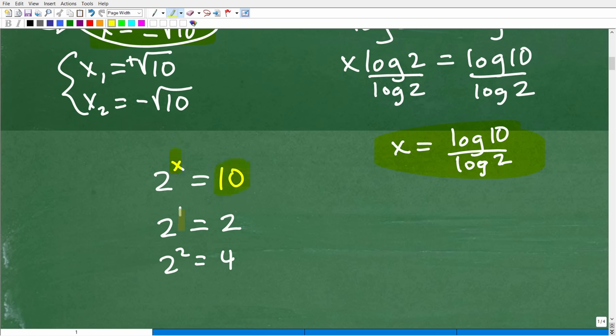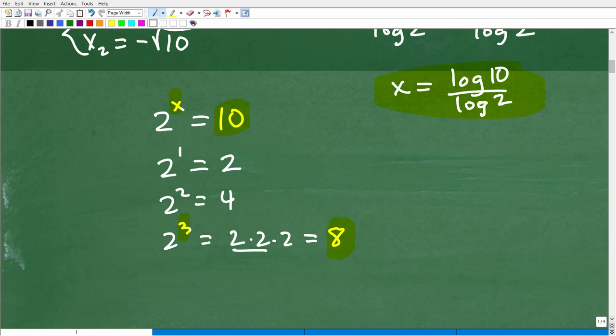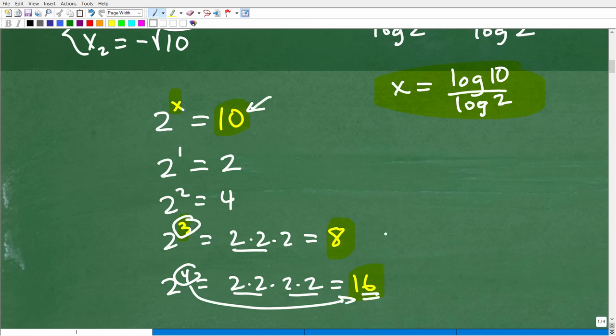I'm just kind of going up here. 2 to the 1st is 2, 2 squared is 4. How about 2 cubed? That's 2 times 2 times 2, which is 4 times 2, which is 8. So that's pretty close. 2 cubed is 8. I want 10, so I'm going to have to increase from 3. Let's go 2 to the 4th power, which is 2 times 2 times 2 times 2. This is 4 times 4, which is now 16. 2 to the 4th puts me way over the top. I want 10, I don't want 16. So 2 cubed is a little bit closer to 10.